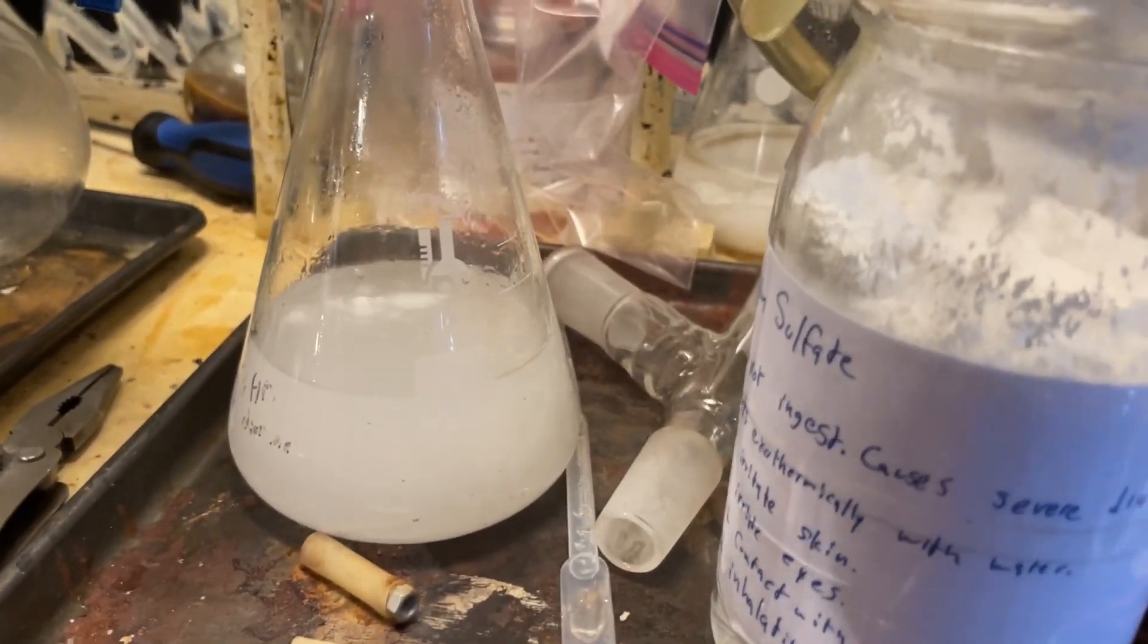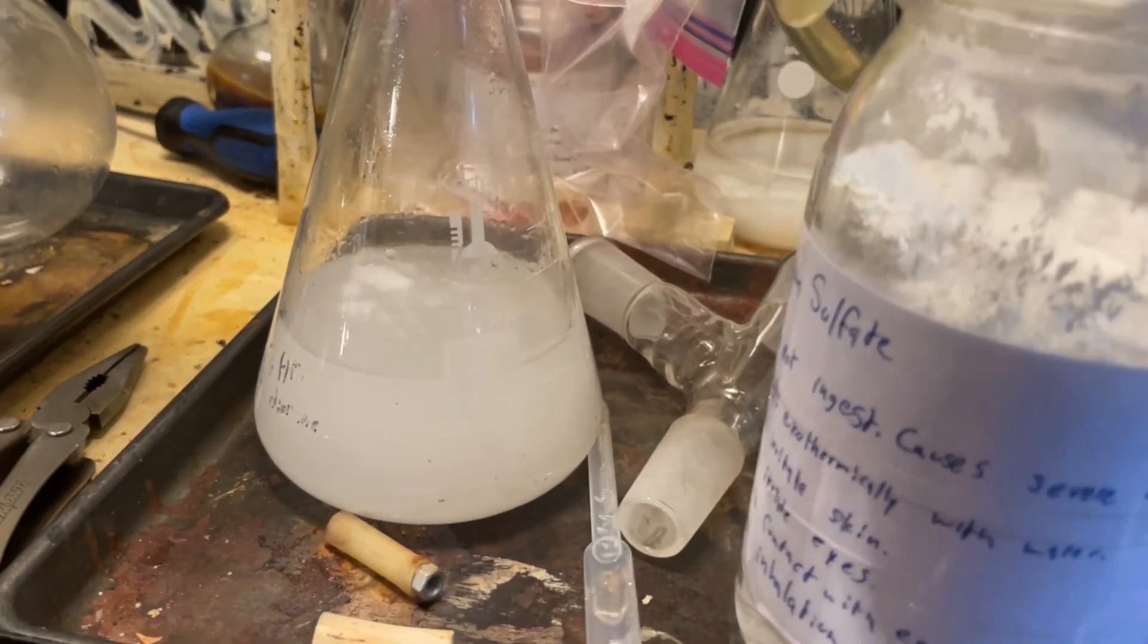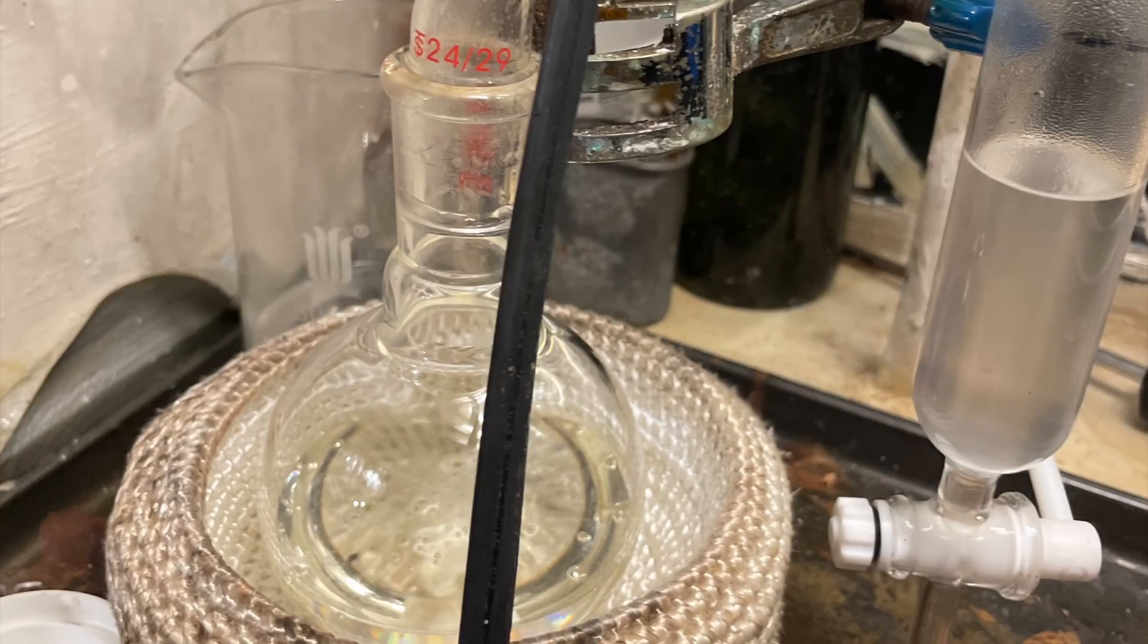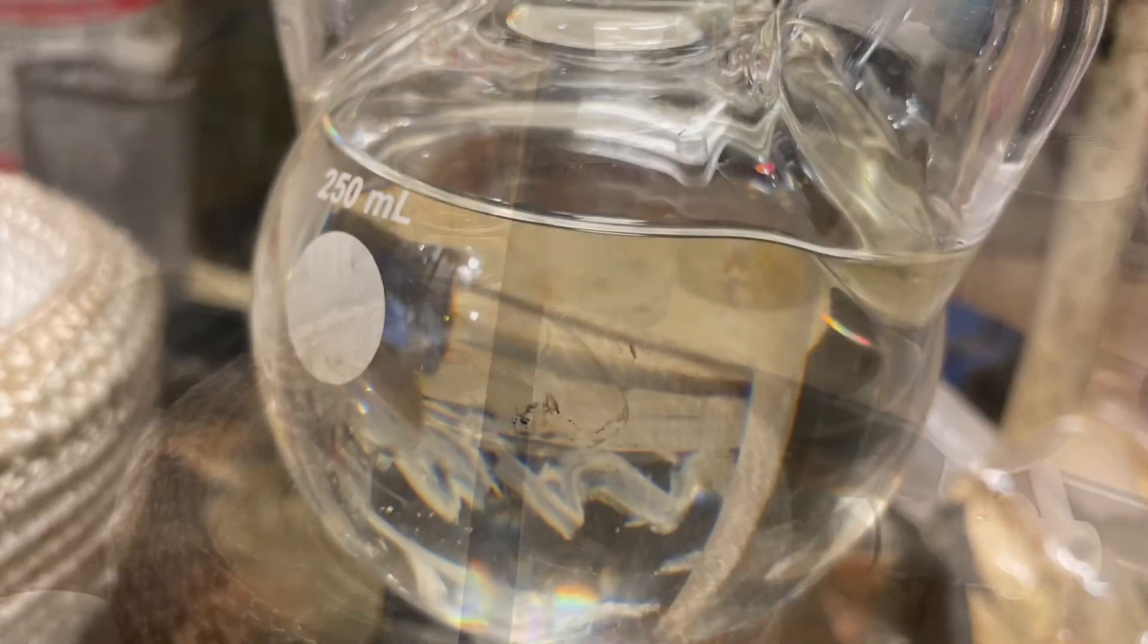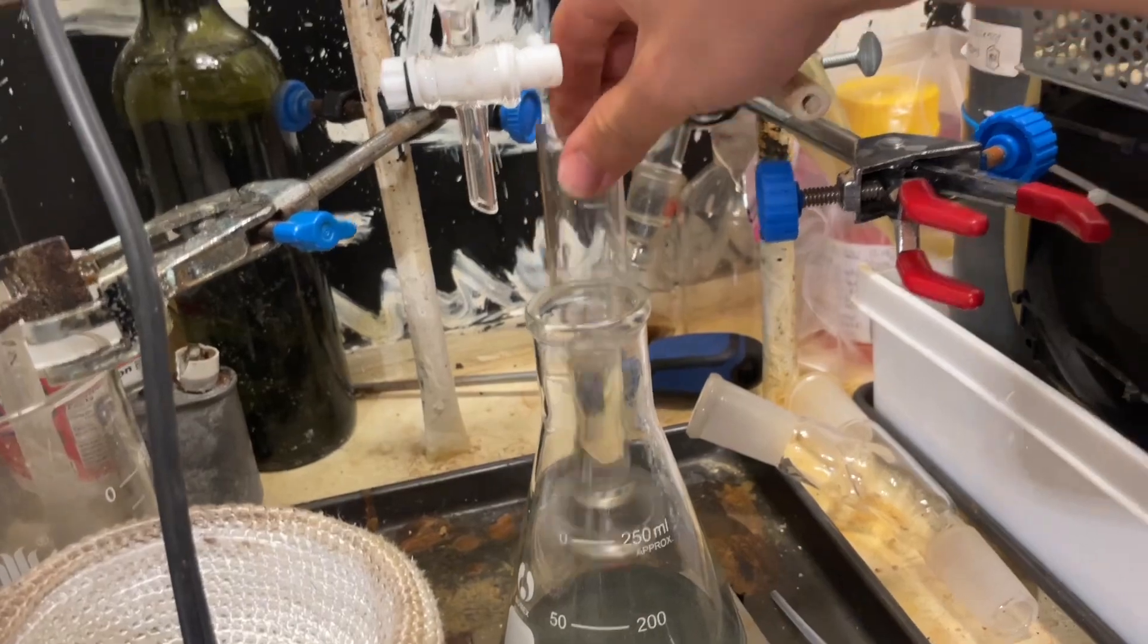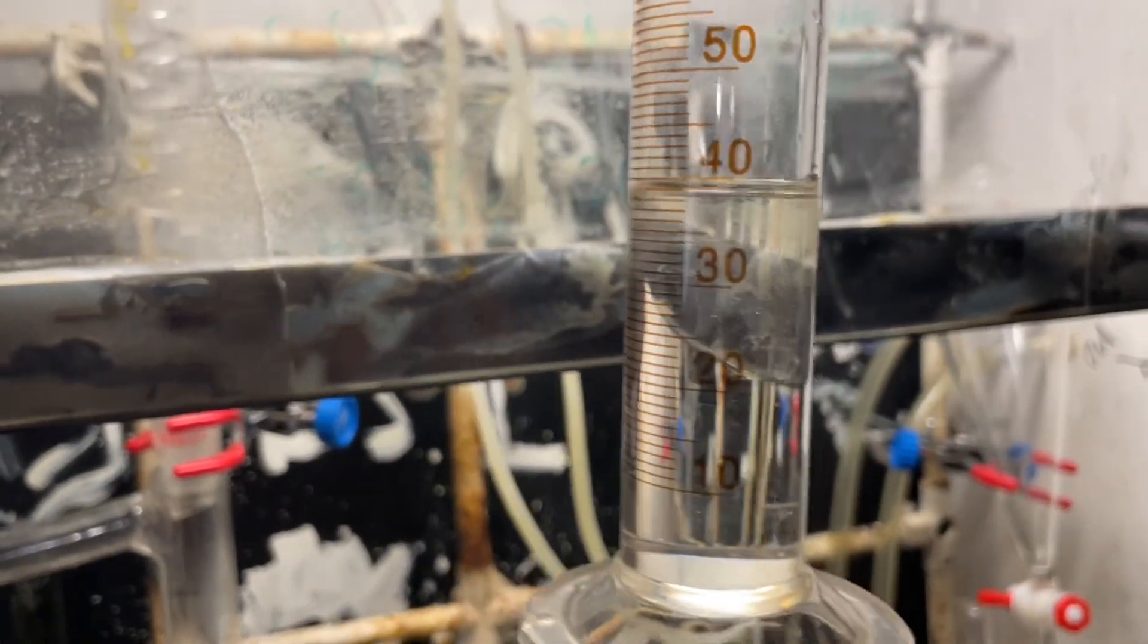So, after separating the dichloromethane, I dried it with some magnesium sulfate. You cannot use calcium chloride because it's complex with the benzyl alcohol. After distilling the dichloromethane off and combining it with the other benzyl alcohol we have, we have approximately 200 milliliters or so, which is a great yield, considering last time I got 100.